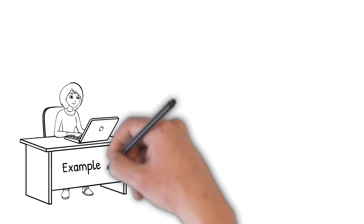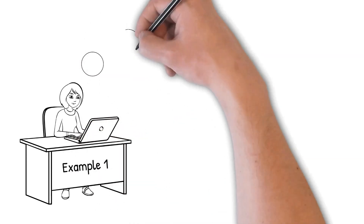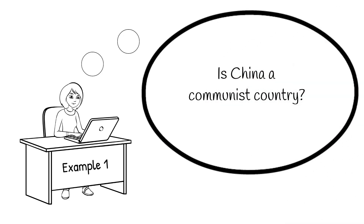Here's my first example — a real question a student was hoping to address: 'Is China a communist country?' This is an interesting and highly relevant topic given the incredible transformations China has gone through. However, the scope is a problem. The fact that it can be answered with a simple yes or no makes this question too narrow. At the same time, it risks being too broad because it uses ill-defined terms like 'China' and 'communist.' It's not entirely clear whether the focus is on the People's Republic of China, and it's also unclear what communism refers to exactly.